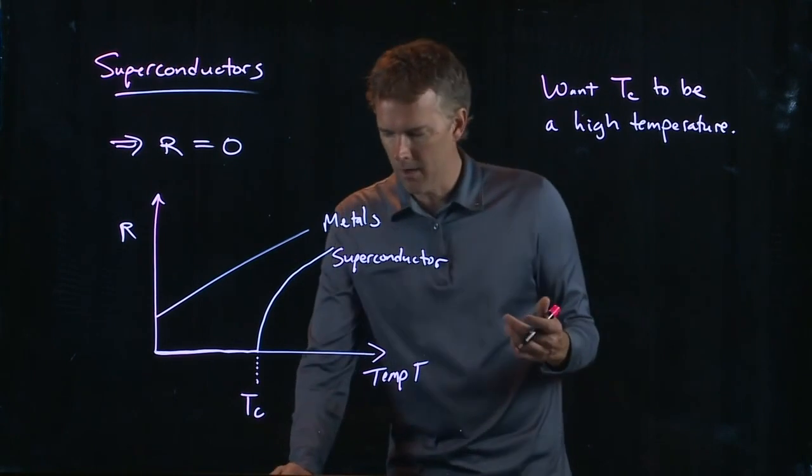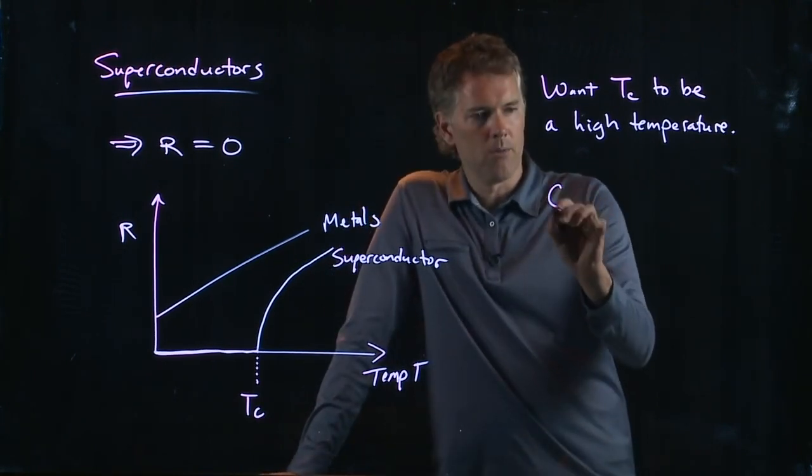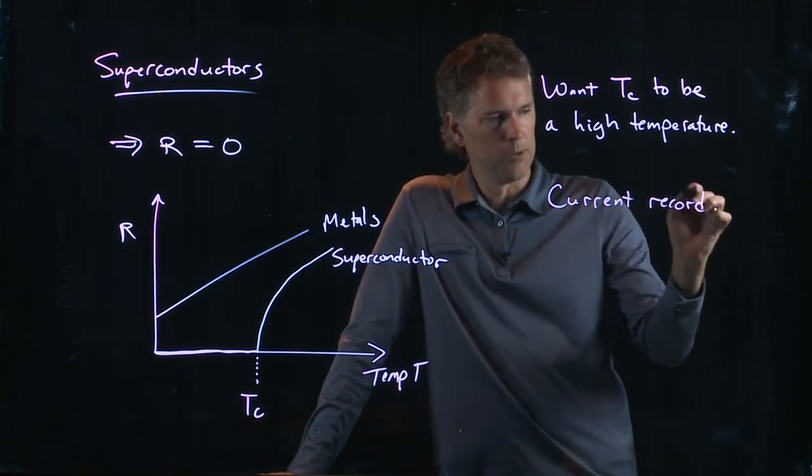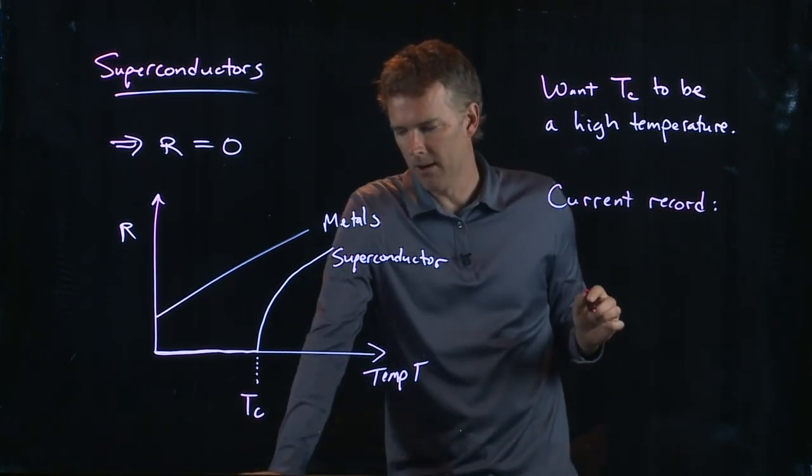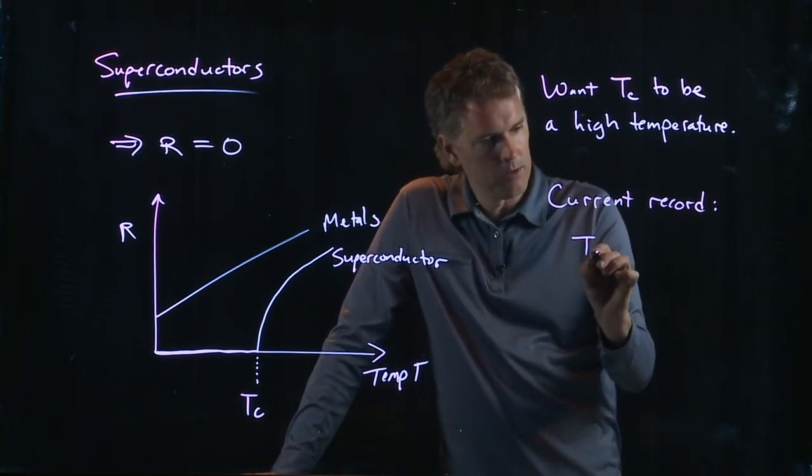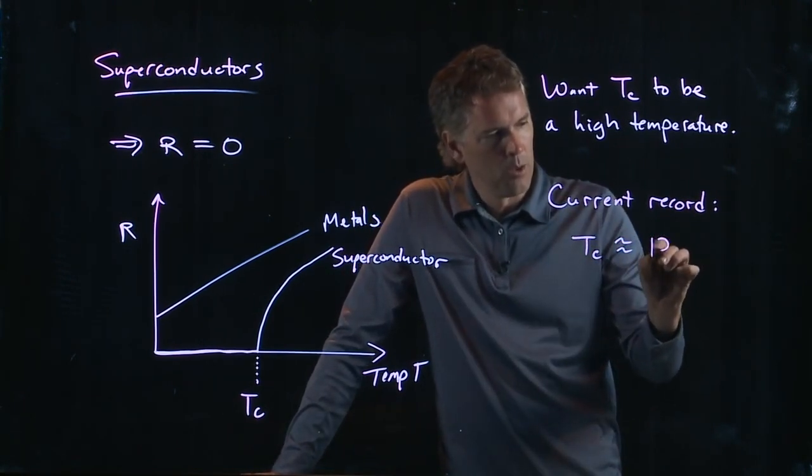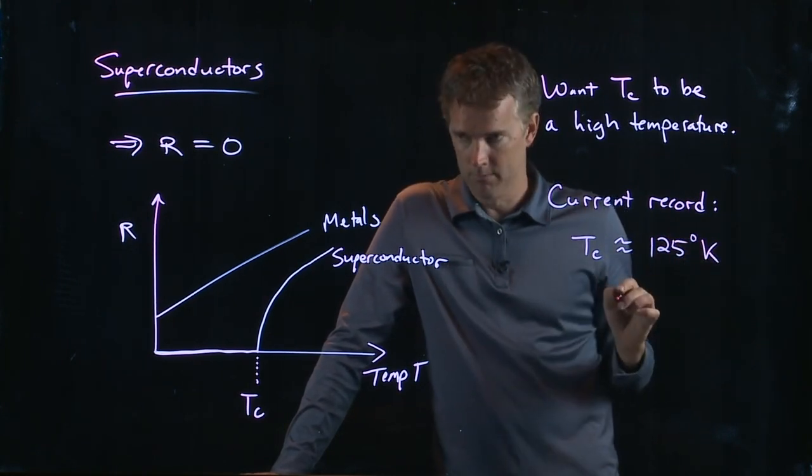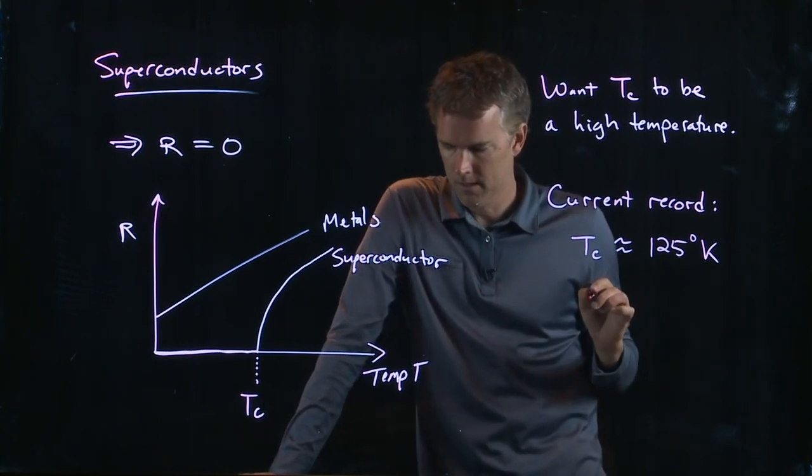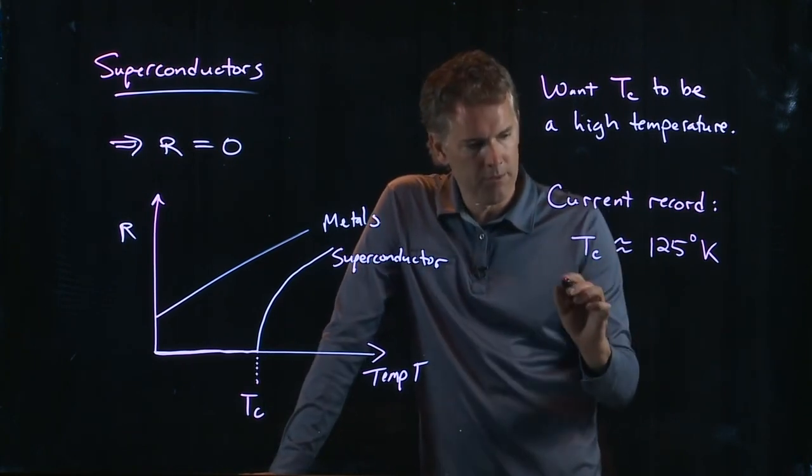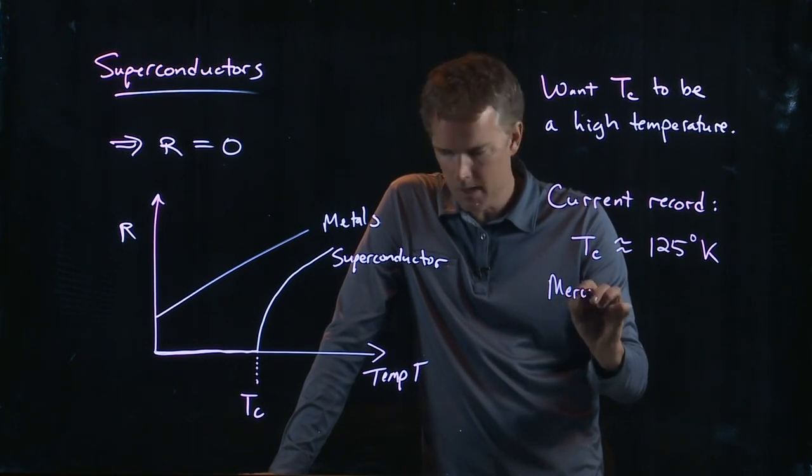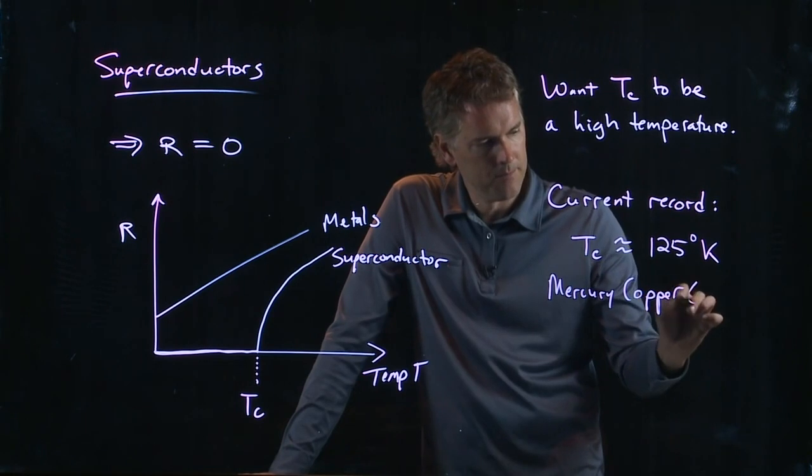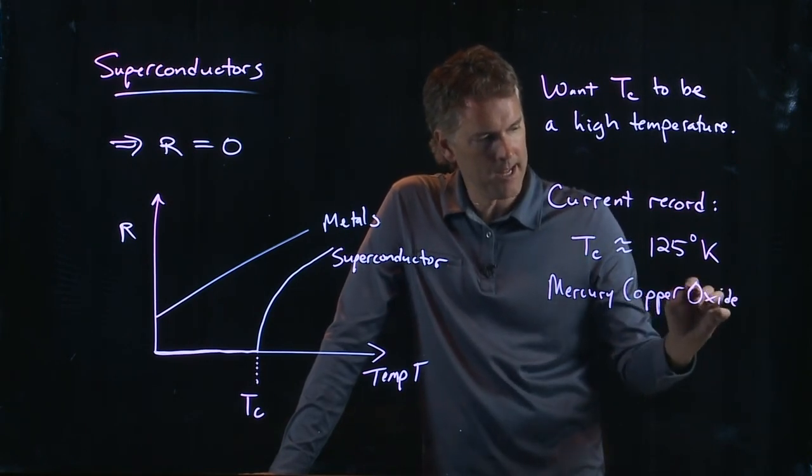So, where are they now? The current record, at least of a couple years ago, you can double-check me on this. Maybe they're up a little bit higher now. But the current record is about 125 degrees Kelvin. And this is something called mercury copper oxide. That's the material that it's made out of.